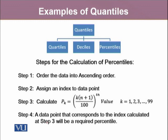For the calculations of a percentile, we take the first step where we order our data into ascending order. In the second step, we assign an index value to each data point. In the third step, we calculate pk by substituting the value of k into this formula. And as the last step, that's the fourth step, a data point that corresponds to the index calculated at step 3 will be a required percentile.